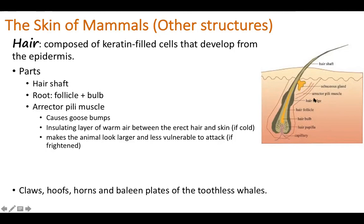There are muscles called erector pili muscles attached to the follicle that help in movement of the hair shaft. When these muscles contract, the hairs stand up, causing goosebumps, which typically occur during cold or when the animal is frightened. When the hairs stand, they trap air between the hair and the skin, forming an insulating layer of warm air. In cold environments, this trapped air helps warm the body.